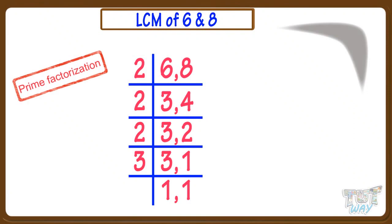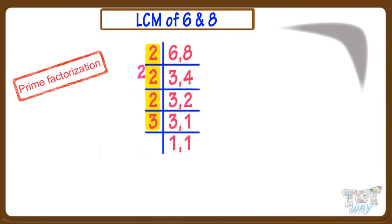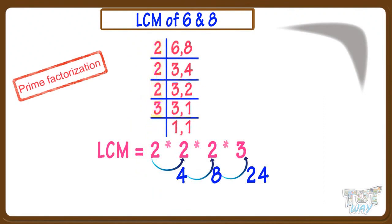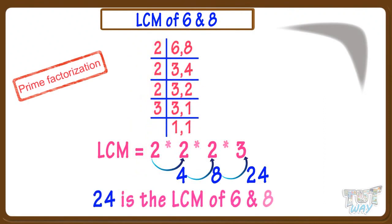We used only prime numbers. Now the next step is: take all the numbers we used to divide and multiply them. So 24 is the LCM of 6 and 8.